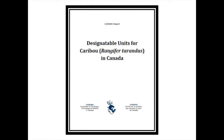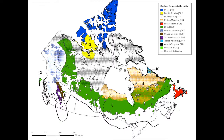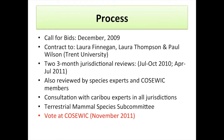The report, which is quite hefty, was posted on the web as of December 2011 and really goes through all of the available evidence to make a case for the structure we came out with, which looks essentially like this: 11 extant designatable units and one extinct DU — Dawson's caribou, number 12 — on what is now Haida Gwaii. This right now is the structure we're working with.